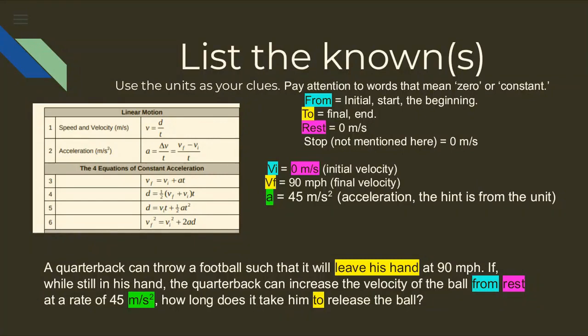So let's look at the known values. From rest, we'll represent our VI or initial velocity with a value of 0 meters per second. The clues of leaving his hand and the quarterback to release the ball is our final velocity or VF at a value of 90 miles per hour. As we mentioned earlier, 45 meters per second squared is our acceleration or variable a.